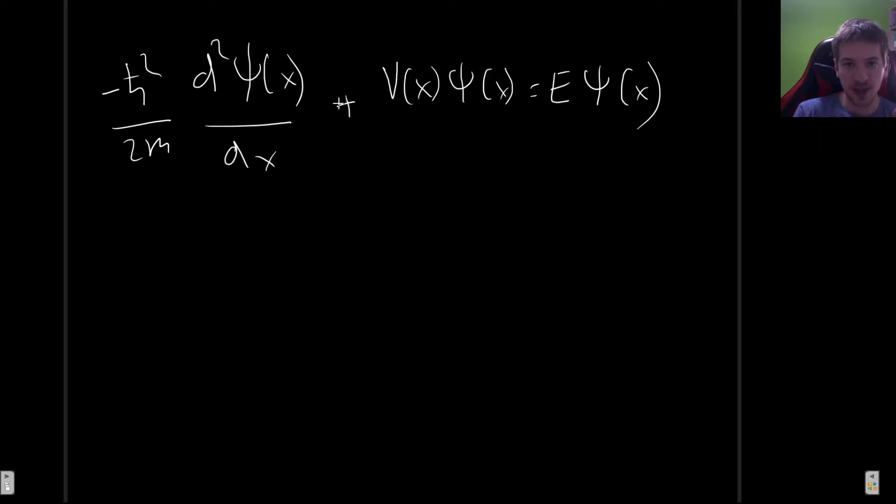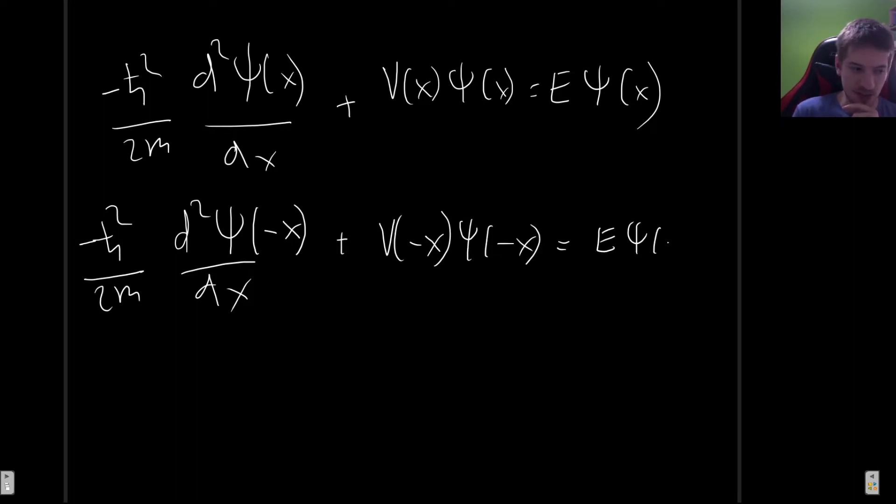So let us now take this equation, but instead of x, put minus x in here and see what happens to this equation. So when we do that, these constants will obviously remain the same, the derivative too, and now this time dependence will be minus x plus the potential of minus x psi of minus x equal E psi of minus x. So this kind of looks like the Schrödinger equation. Remember this right there is the Schrödinger equation, but this time we have this potential of minus x. But in this particular case the potential is even, so this right here is the same as just the potential of x.